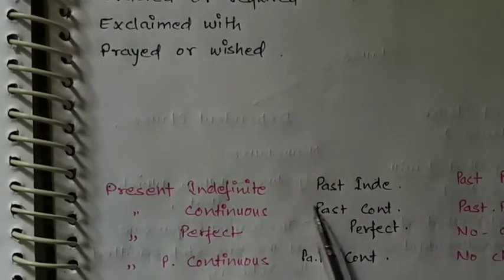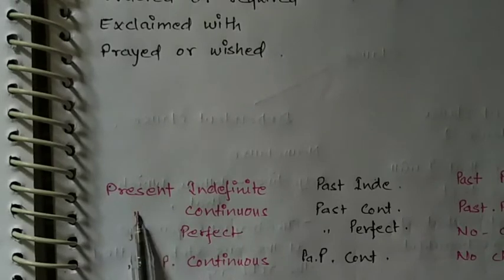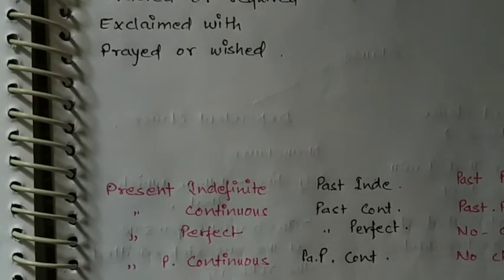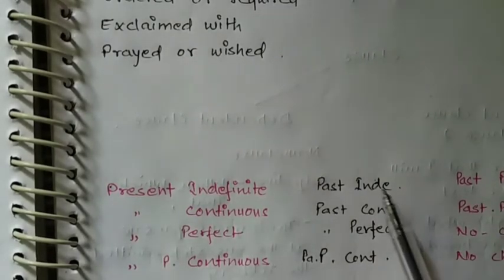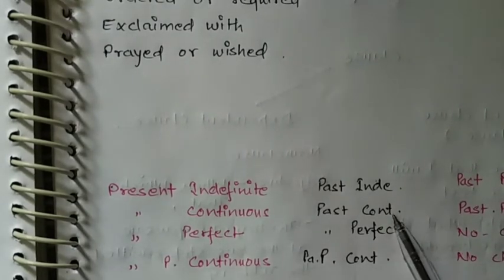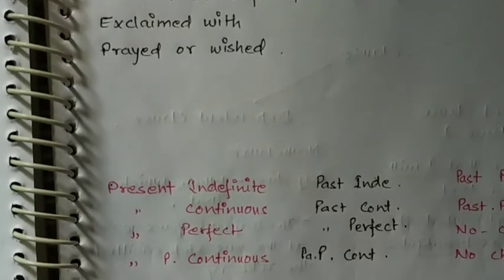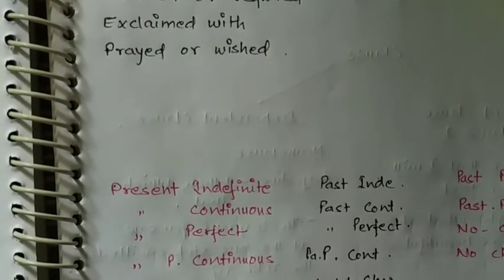Next is the change in tenses. Present indefinite will be changed into past indefinite. Present continuous will be changed into past continuous. Present perfect will be changed into past perfect. Present perfect continuous will be changed into past perfect continuous. Past perfect and past perfect continuous — there will be no change. Now remember, if we are changing future tenses, 'will' and 'shall' will be changed into 'would' and 'should'.